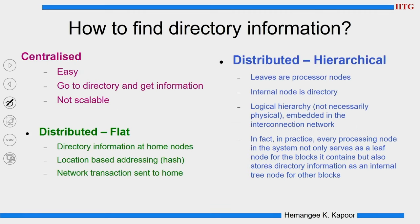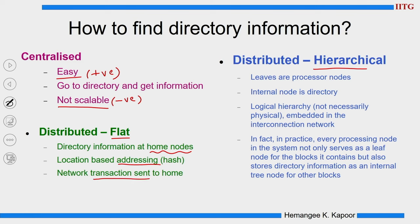How do I find information about the sharers? In centralized it's very easy - just one place, though it is not scalable. In distributed flat, the directory information is with the home nodes. You need to know where the home node is, which is easy to find using the address of the cache block - you simply use hashing to find the home node address. Once you know the address, you know the home node, you go there and find the sharer information.